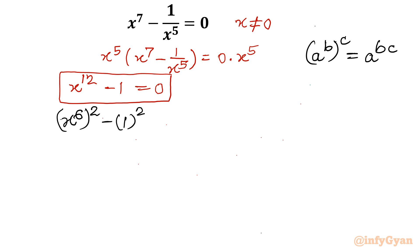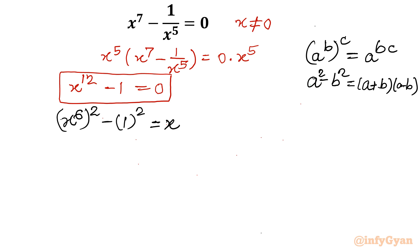Now applying the difference of squares formula, a square minus b square, I will write this as x power 6 plus 1 in one bracket times x power 6 minus 1 equal to 0.